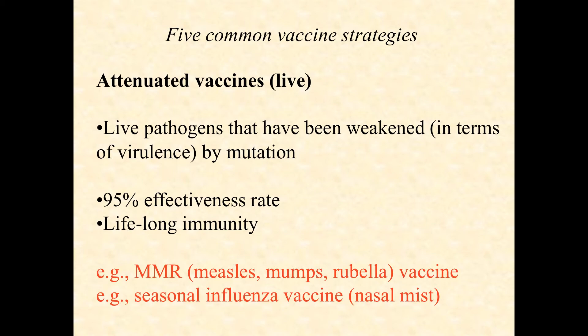For example, the nasal mist seasonal flu vaccine is live, but it's been grown up in chicken eggs for so many generations that it's now much better at infecting chicken embryo epithelial tissue than it is at infecting human respiratory tract epithelial tissue. So there are tricks that can be used in the lab to attenuate, or moderate, the virulence of a pathogen.